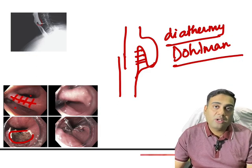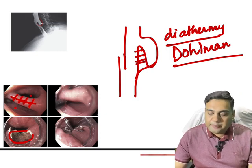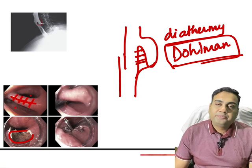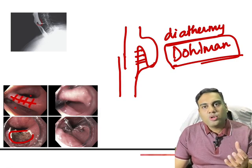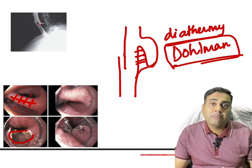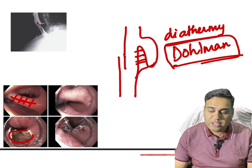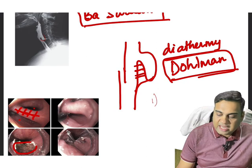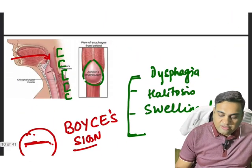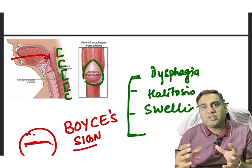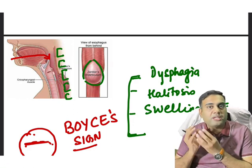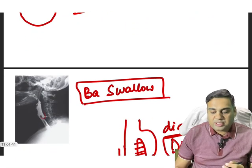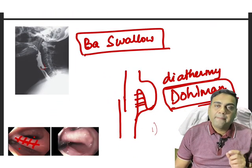If you cannot do endoscopic diathermy, or the diverticulum is too big, or biopsy shows malignant transformation, then go for open surgery. To summarize Zenker's diverticulum: it arises from between the cricopharyngeus and thyropharyngeus — part of the inferior constrictor. The swelling is in the lateral neck. The patient presents with halitosis and dysphagia. Investigation of choice is barium swallow.